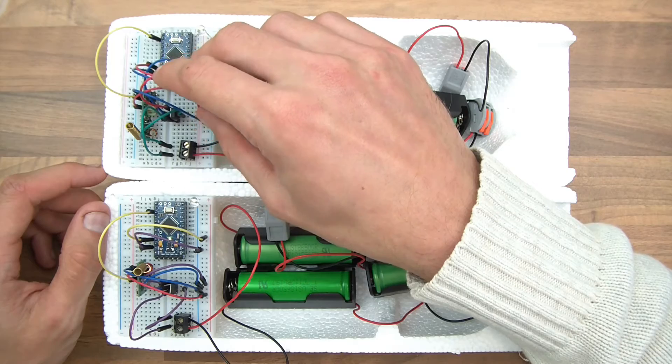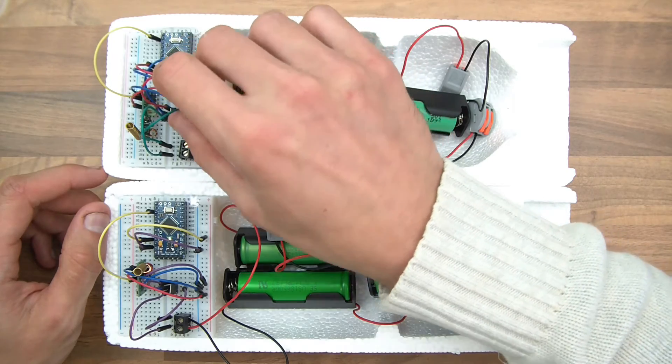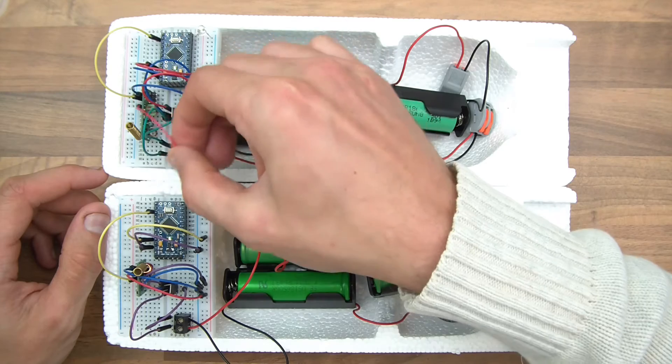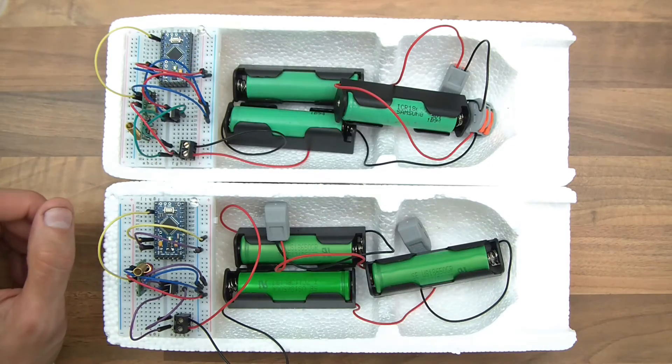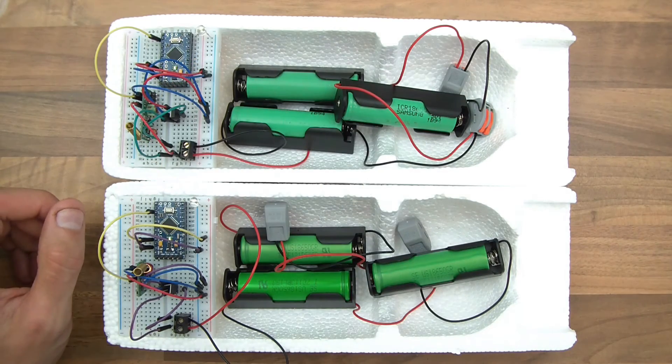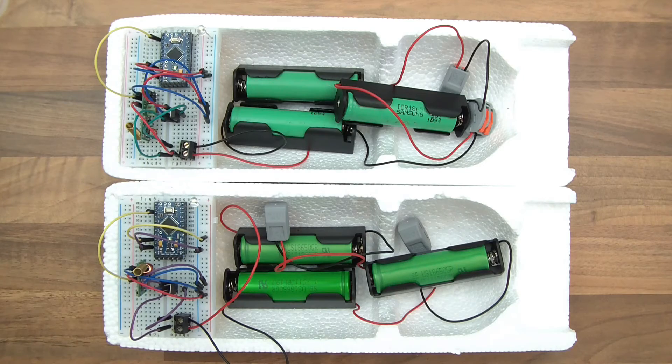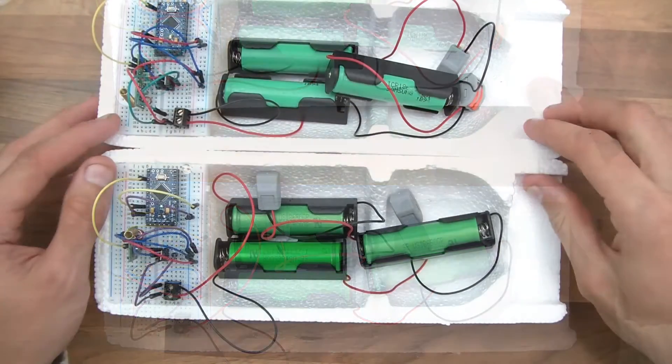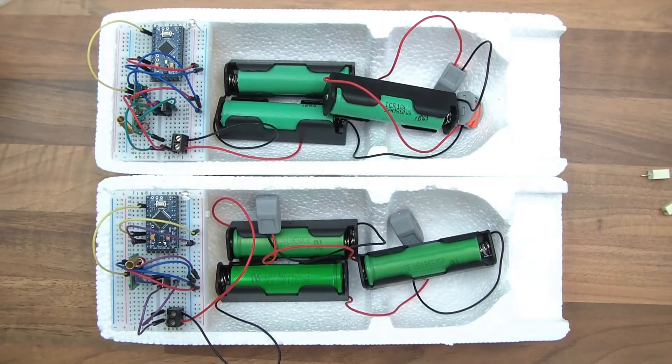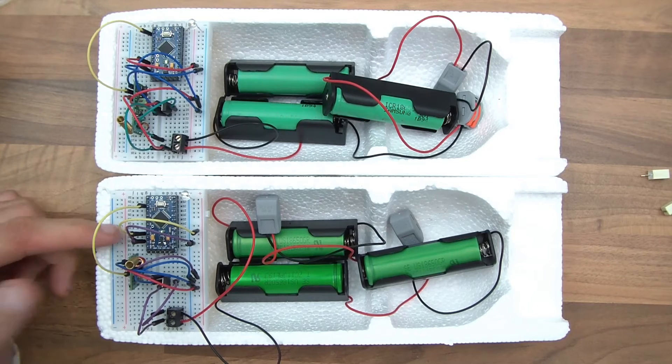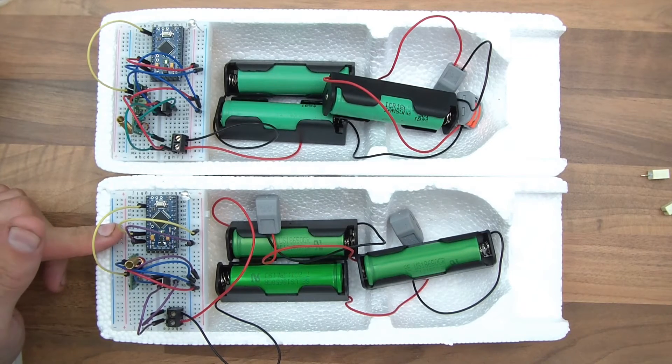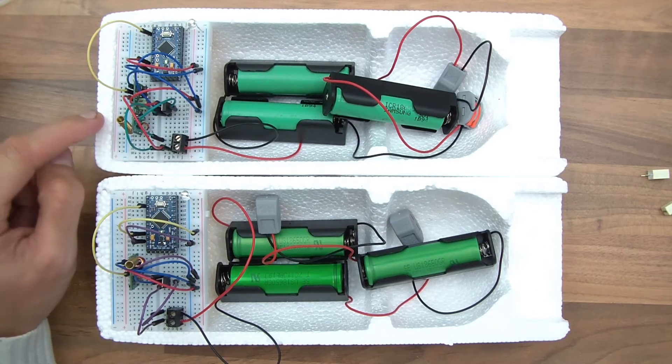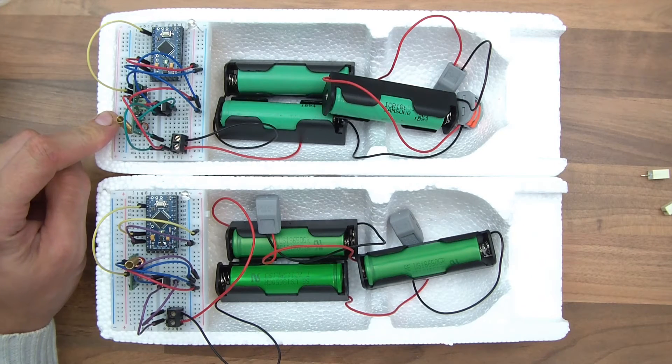So let's change the VCC of the receiver. Let's change that to 12V. Yeah, that receives, although it doesn't seem to be receiving everything, but it is receiving. So for whatever reason, I can't make my transmitter a 12V transmitter, but I can make the receiver a 12V receiver.